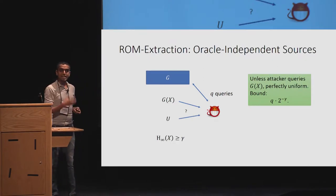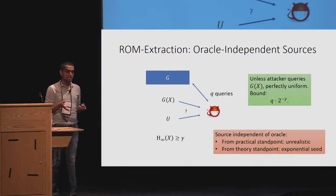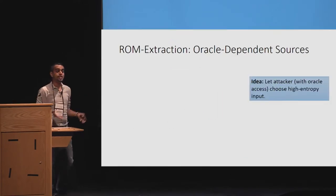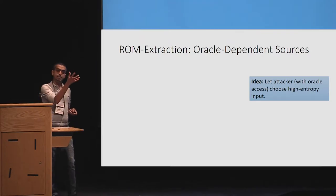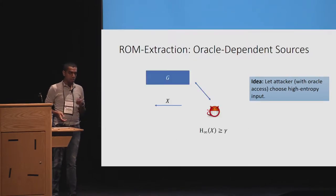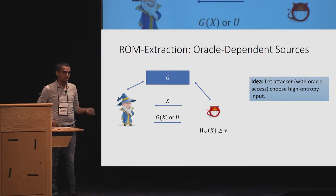Clearly, we have the proof, which is the folklore proof, which says that unless the attacker actually ends up querying X in one of the queries it makes, the output is perfectly random. So this gets us the bound Q times two to the negative gamma. But what is the caveat? The caveat is that from a practical standpoint, this is unrealistic. And from a theoretical standpoint, we have an exponential seed, which is an overkill.